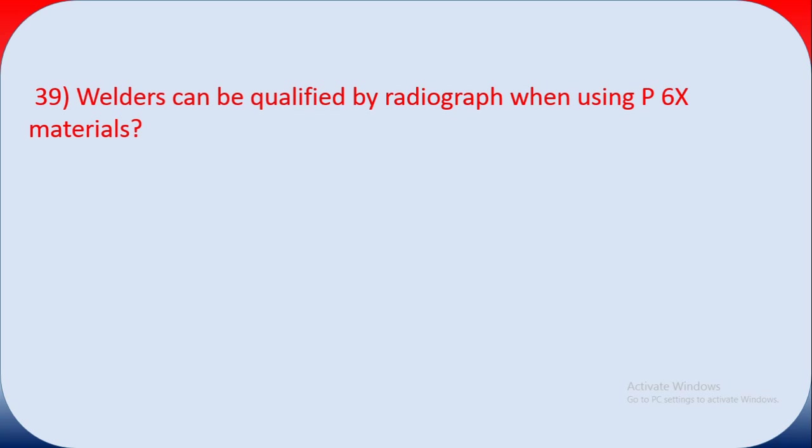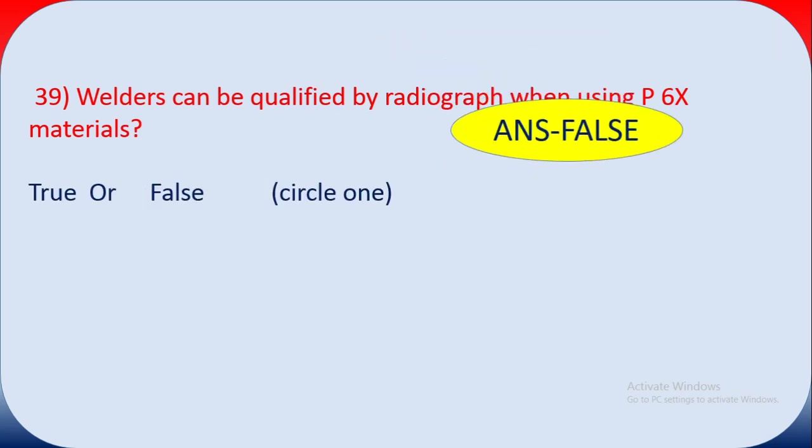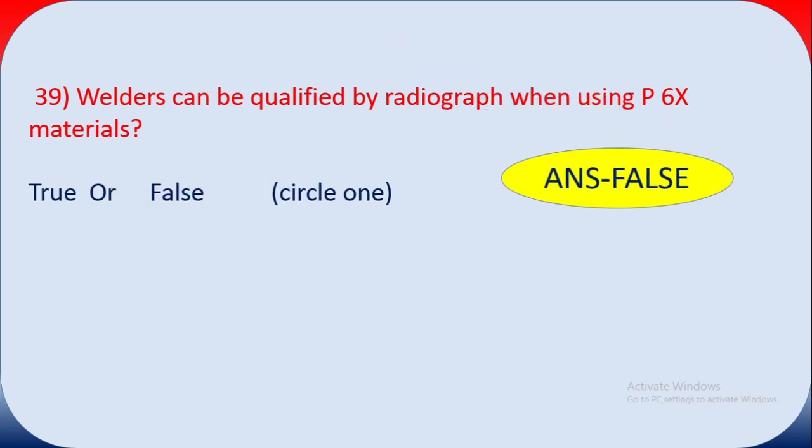Question thirty-nine: a welder can be qualified by radiography when using P6 material — true or false? The answer is false.